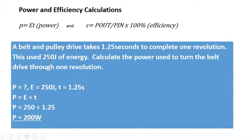Power and efficiency, so a belt and pulley drive takes 1.25 seconds to complete one revolution and uses 250 joules of energy. So we're going to calculate the power used.